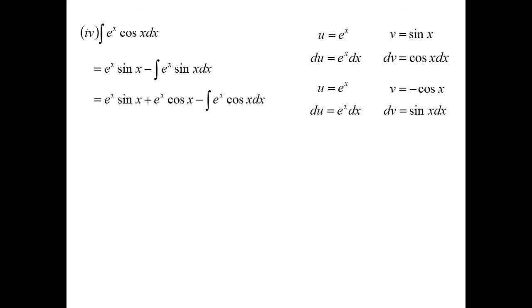So it's going to be minus uv, so minus minus becomes plus e to the x cos x, minus minus minus the integral of e to the x cos x. Oh, I'm back to where I started.